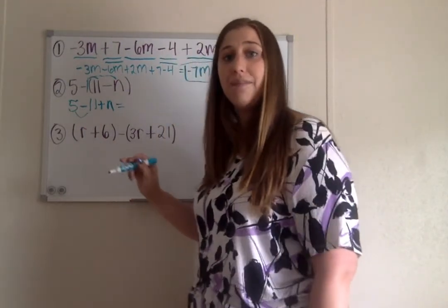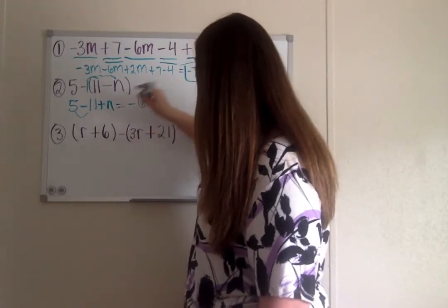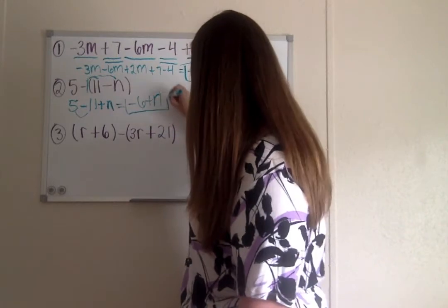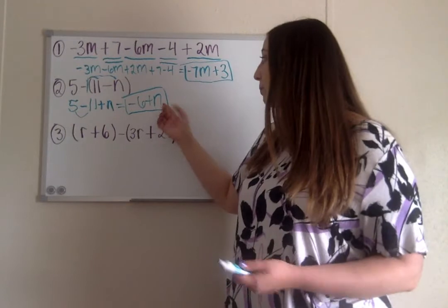From there, hopefully we see we have two more like terms we can combine. 5 minus 11 gives us negative 6, and then we still have our plus n. So our final answer is negative 6 plus n.